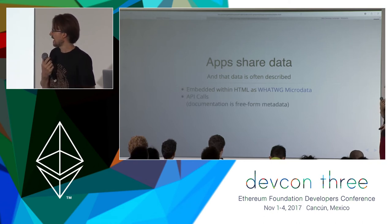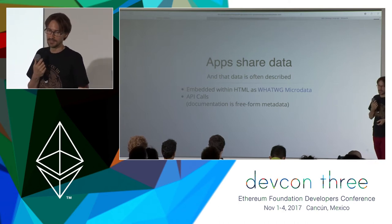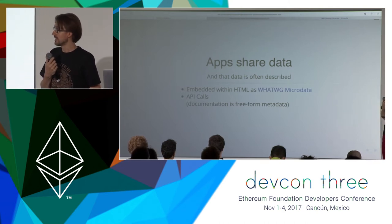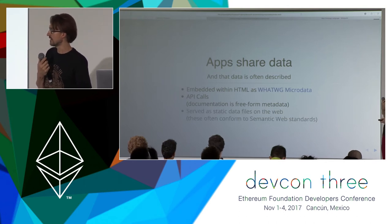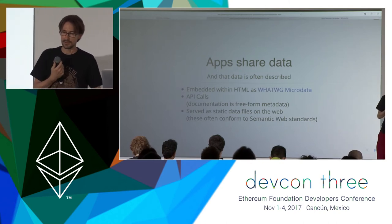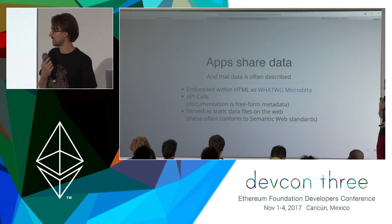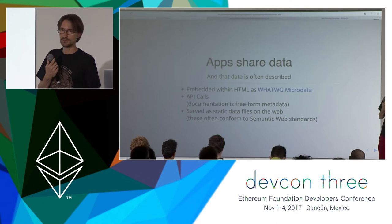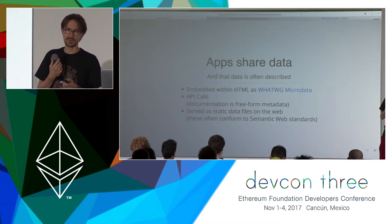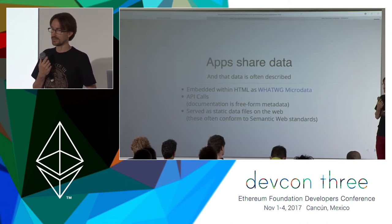Much of that data, as web developers know, is embedded in HTML — that's the standard microdata. API calls are out there and can be considered metadata, which is one of the reasons why we must maintain great documentation. Much of the semantic web is out there, not really forming a full semantic web everyone uses, but it's useful. For example, Wikipedia has been converted into a database — Wikidata — where you can pull a lot of data and relate things together.